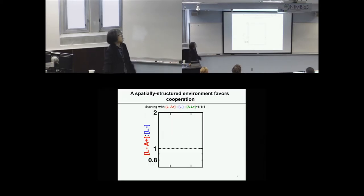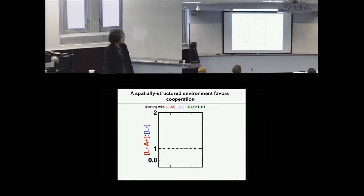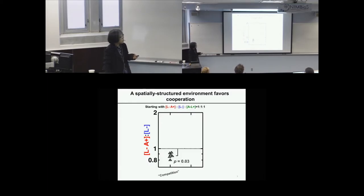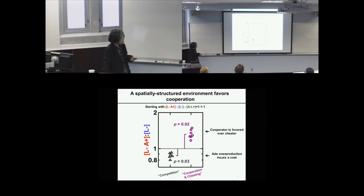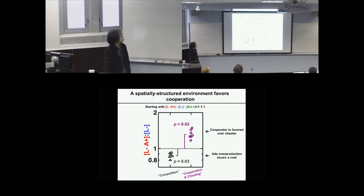We wanted to confirm that the spatially structured environment can indeed stabilize cooperation. We mixed the three cell types at one-to-one-to-one and placed them on an agar pad, then tracked the cooperator-to-cheater ratio over time. Under competition, the ratio dropped below one, indicating adenine overproduction incurs a fitness cost. But when forced to cooperate and cheat, cooperators became more fit than cheaters. Furthermore, disrupting the spatial structure by periodically mixing cells eliminated this effect, confirming it absolutely requires a spatially structured environment.